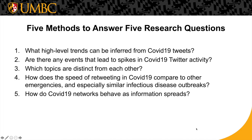In our paper we used five different methods to answer five different research questions. First, what are the high-level trends that can be inferred from COVID-19 tweets? Second, are there any events that led to spikes in COVID-19 Twitter activity? Third, which topics are distinct from each other and are there different visualization methods we can use to understand that distinction? Fourth, how does the speed of retweeting in COVID-19 compare to different disease outbreaks or emergencies? And fifth, how do COVID-19 networks behave as information spreads?